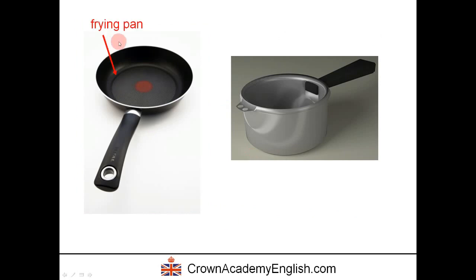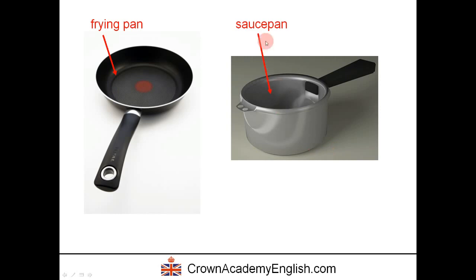This is called a frying pan. With a frying pan, we pour oil in and cook eggs, for example, or we fry other food. And this is called a saucepan. We use a saucepan to heat and cook liquid foods — for example, soup or a sauce. This is the handle of the saucepan and this is the handle of the frying pan.